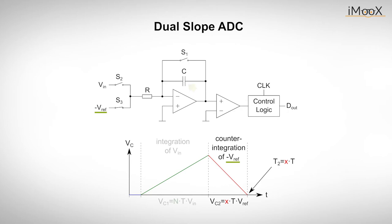Since the reference voltage has a negative sign, the value of the integral is zero again at a certain point in time. At this point, the comparator interrupts the reference integration. The counter in the control logic displays the result X, which is proportional to the duration of the reference integration.